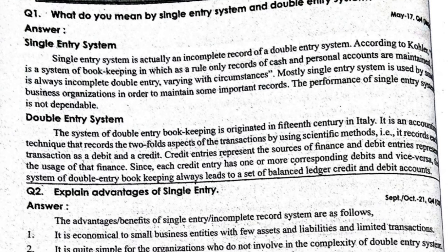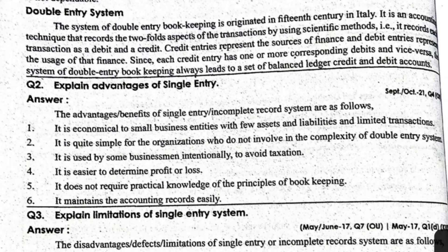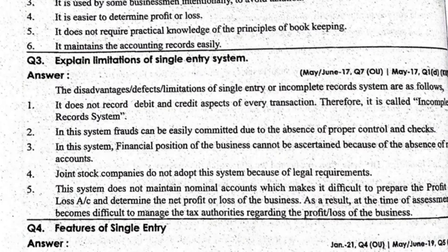In this unit we are not having any long theory questions, so they will ask compulsory short questions — either problematic or theory. We can mostly expect theory. The advantages of single entry system are: first, it is easy and simple compared to double entry system; second, it is useful for small-scale businesses; third, it is easy to identify profit and losses; and fourth, it maintains account records more easily compared to the double entry system.